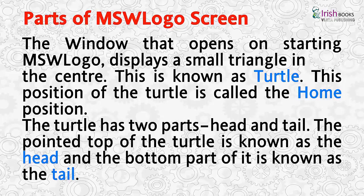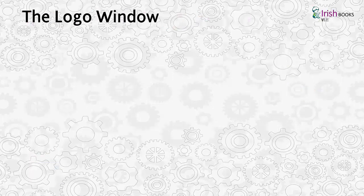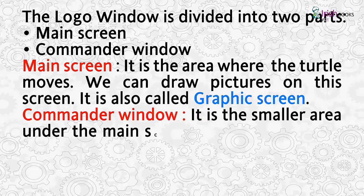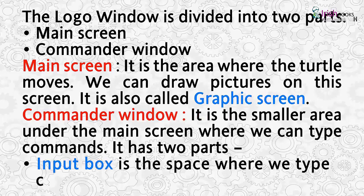This triangle is known as the turtle. This position of the turtle is called the home position. The turtle has two parts: head and tail. The pointed top of the turtle is known as the head, and the bottom part of it is known as the tail. The Logo window is divided into two parts: the main screen and the commander window.